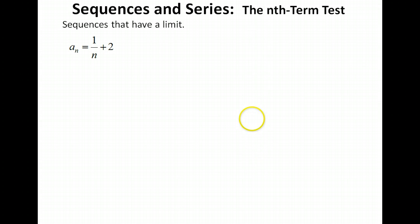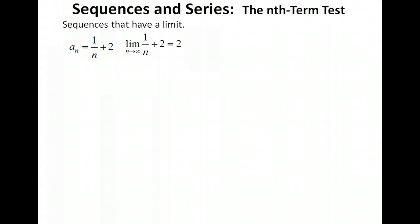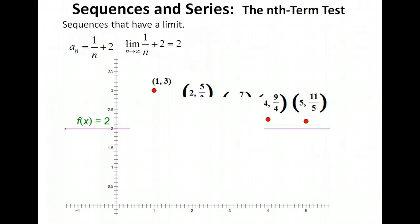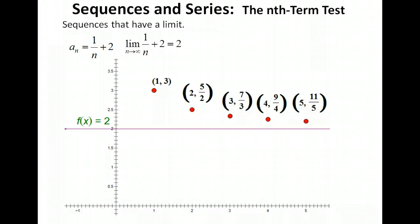Let's look at another example. We have 1 over (n + 2) representing the terms of our sequence. As n goes to infinity, 1/n goes to 0, so all we're left with is 2. So this sequence has a limit of 2. Looking at the graph, the points appear to approach 2, confirming the limit.